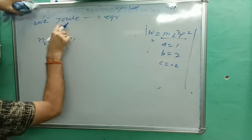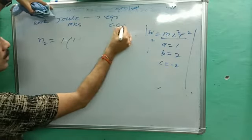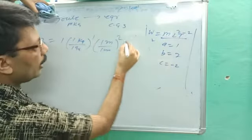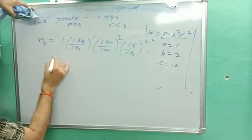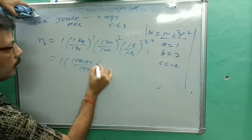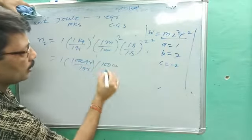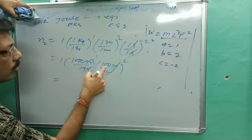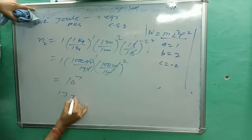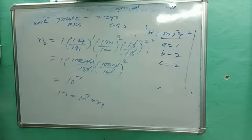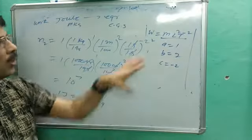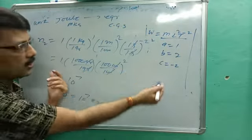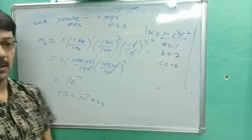Using n2 = n1 × (M1/M2)^a × (L1/L2)^b × (T1/T2)^c with n1 = 1, substituting: (1 kg / 1 gram)^1 × (1 meter / 1 centimeter)^2 × (1 second / 1 second)^(−2) = 1000 × 100² × 1 = 1000 × 10000 = 10^7. So 1 joule = 10^7 erg. To summarize: write the dimensional formula, compare powers a, b, c, and apply the formula to get n2.